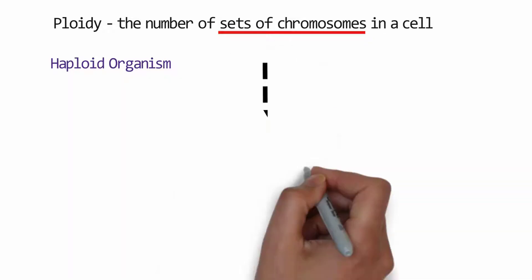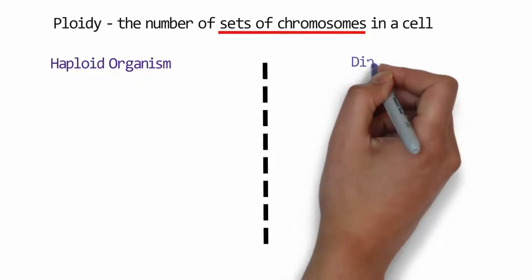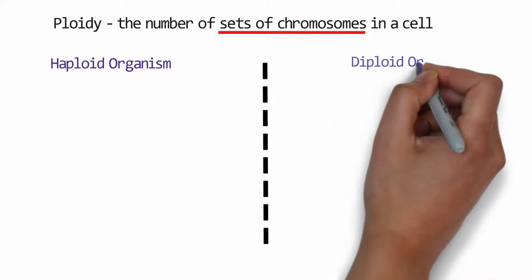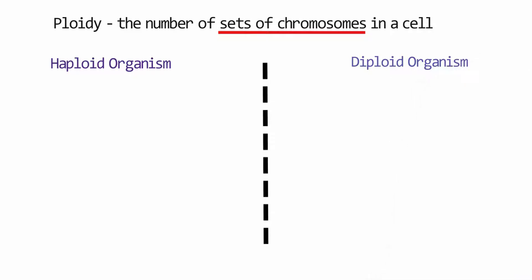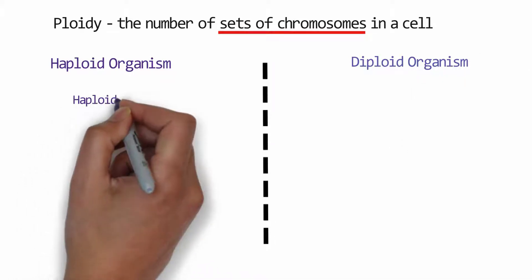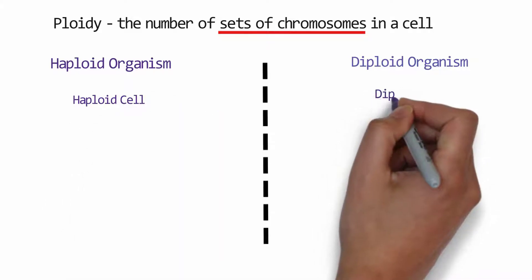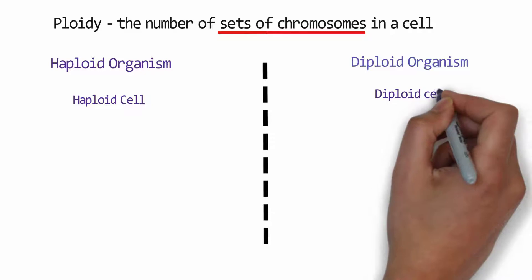Organisms which have haploid cells, we call them haploid organisms. And organisms which are made up of diploid cells, we call them diploid organisms. Haploid organisms have haploid cells and diploid organisms have diploid cells.